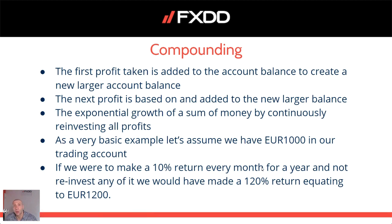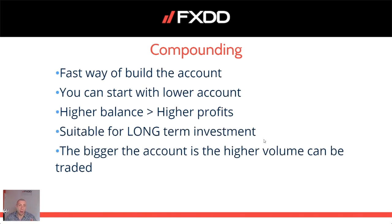Let's assume we have €1,000 in our trading account. If we were to make a 10% return every month for a year and not reinvest any of it, we would have made a 120% return, equating to approximately €1,200. Compounding is a fast way of building the account, but I'm not saying it's a fast way to get rich. Forex is not for those who want to get rich immediately. You need a good trading strategy, good trading method, proper psychology and risk management. When all three things are aligned, you can hope to be successful and profitable. If any of those three fail, you will fail.